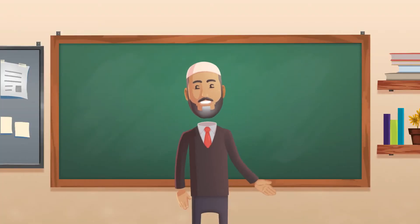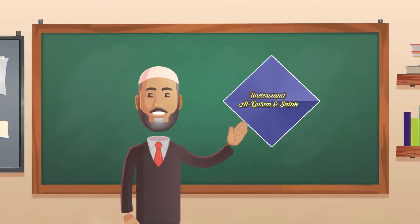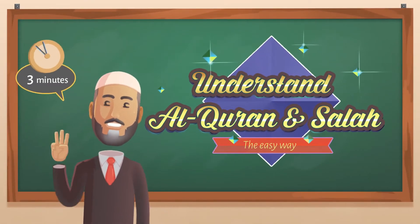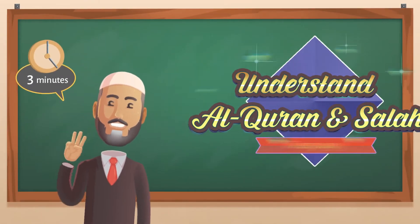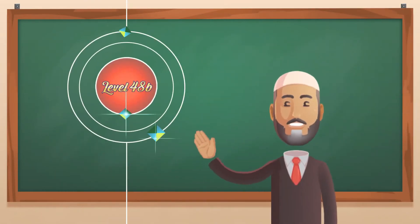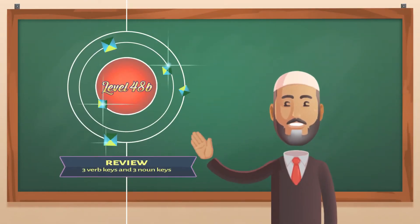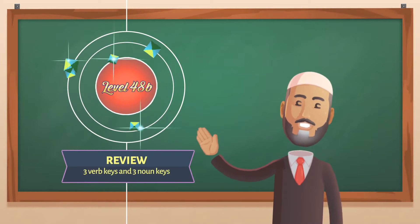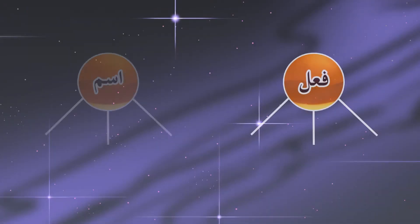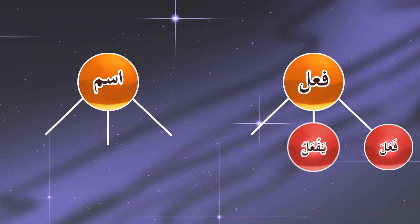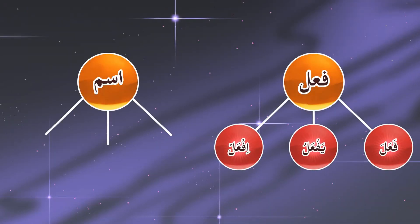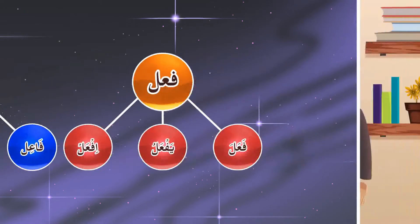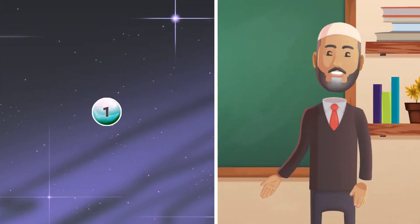Alhamdulillah wa salatu wa salam ala rasoolillah. Understand Al-Quran and Salah the Easy Way, 3 Minute Series, Lesson Number 48B. Review of the 3 verb keys and 3 noun keys: fa'ala, yafa'al, if'al, fa'al, maf'ool, fi'il.